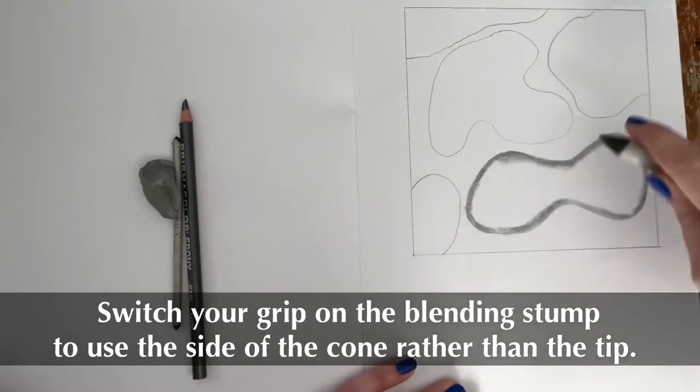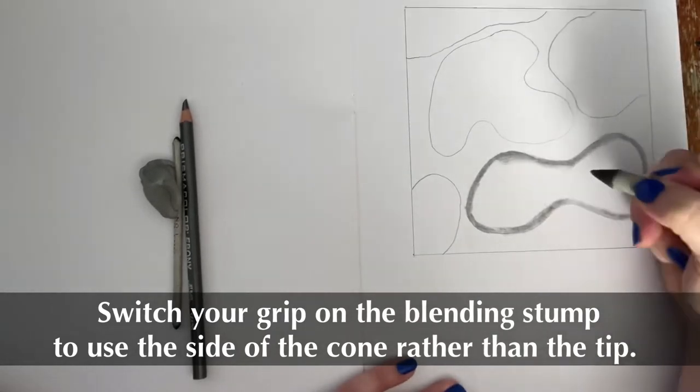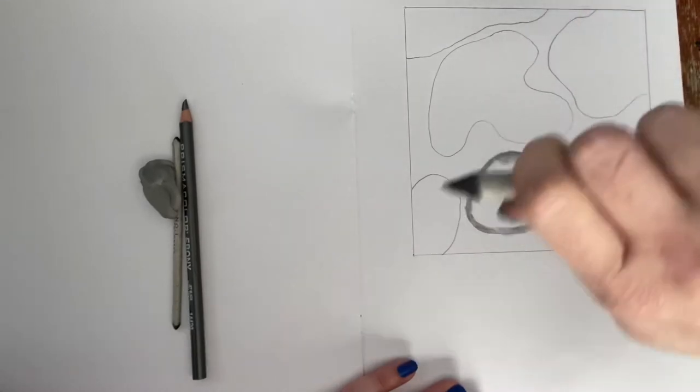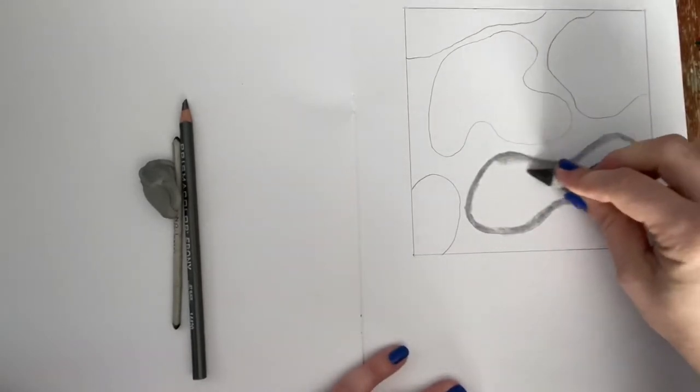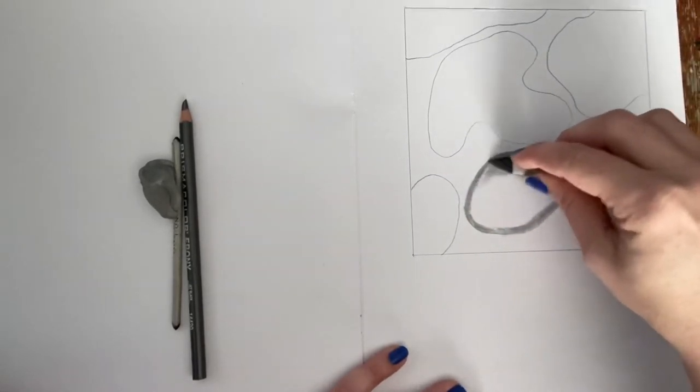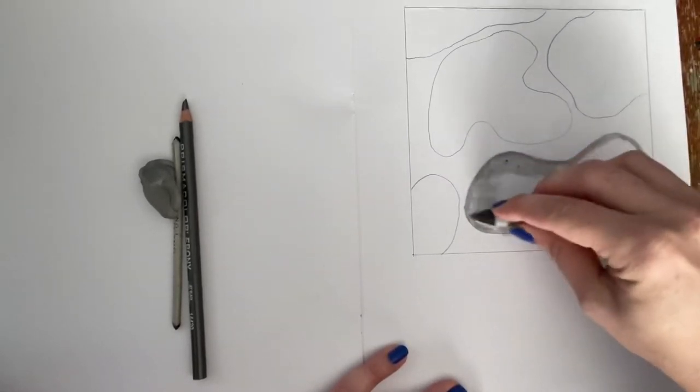Sometimes you need the flat, so I'm going to switch up my grip. So rather than using that pencil grip, I'm going to do like an overhand, the way they told you not to do it in kindergarten. So that way I'm getting the side of the blending tool.